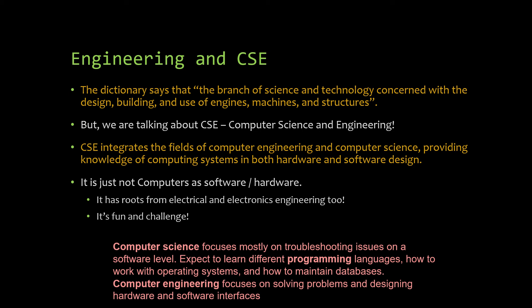CSE integrates computer science and computer engineering together. Computer science focuses on programming languages, troubleshooting at the software level, operating systems, and how to maintain databases. Computer engineering focuses on solving problems and designing hardware and software interfaces, with roots in hardware and connections to electrical and electronics engineering. You study the combination of both to graduate as a computer science engineer.